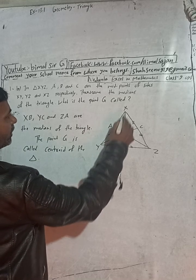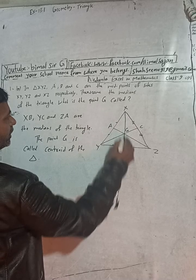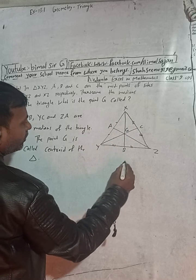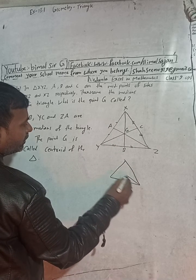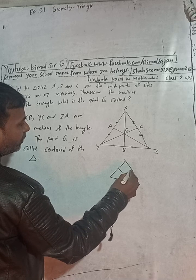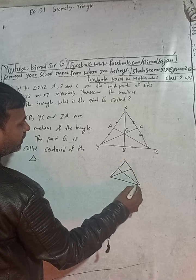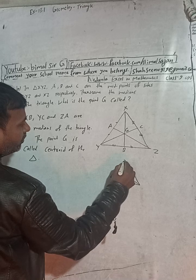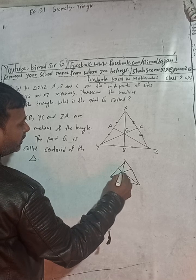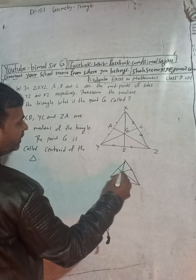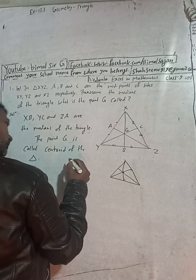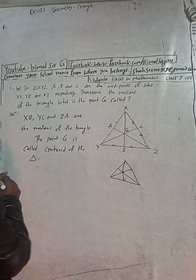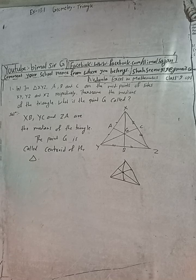The centroid is the meeting point of the medians. These three medians — joining each midpoint to the opposite vertex — all meet at this point. So this is the solution of question 1b.